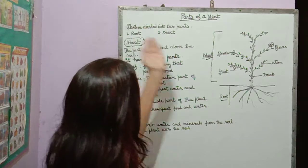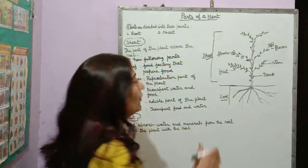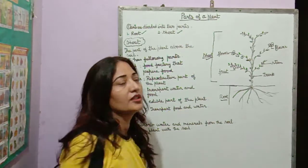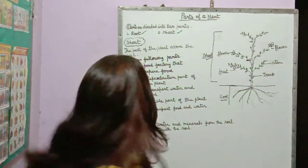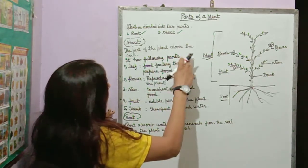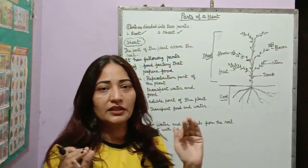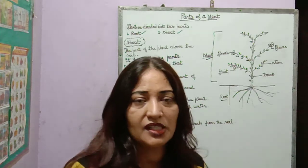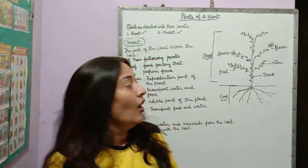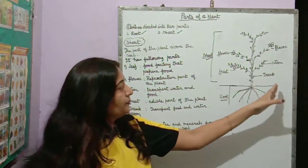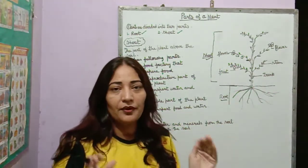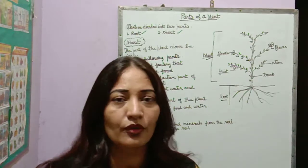So, plants are divided into two parts. First part is root system, second part is shoot. Shoot is the part of the plant above the soil. I have written this definition in very easy language so that you can understand easily. If you draw a diagram and write this definition, and if your question is of five marks, then you will score full marks.